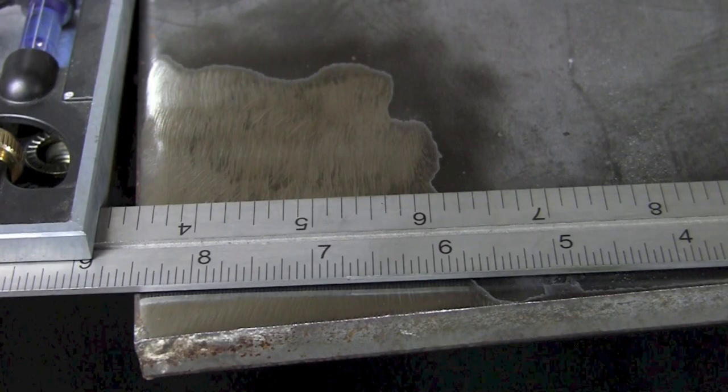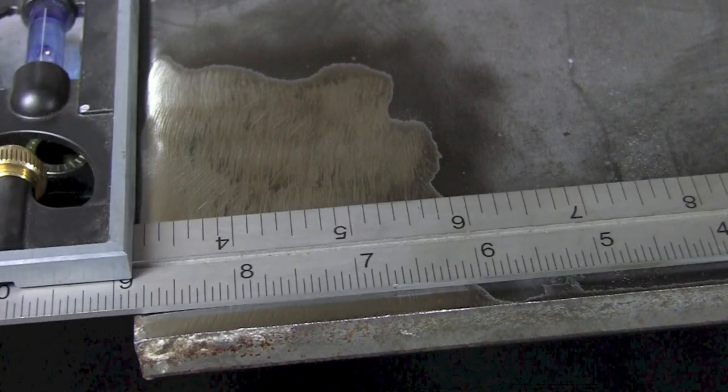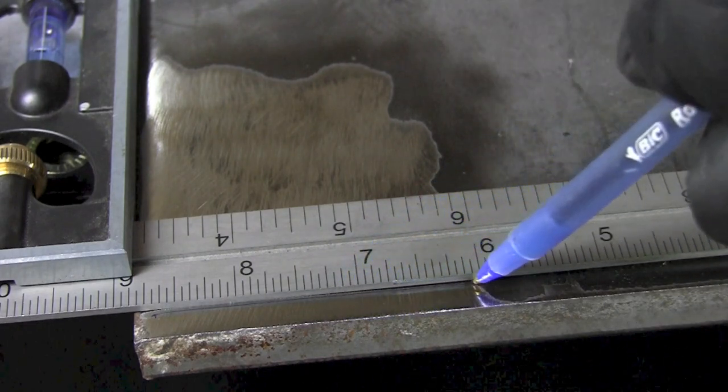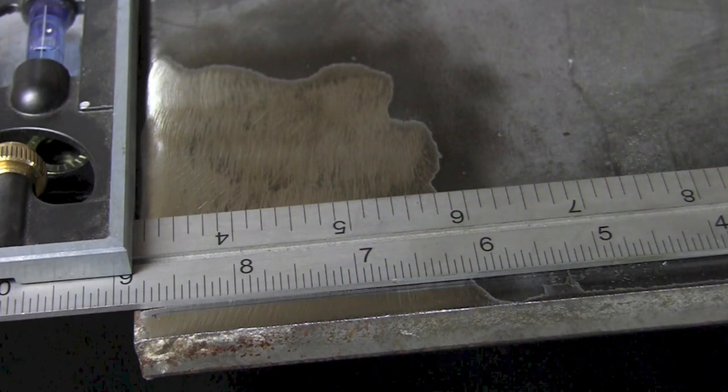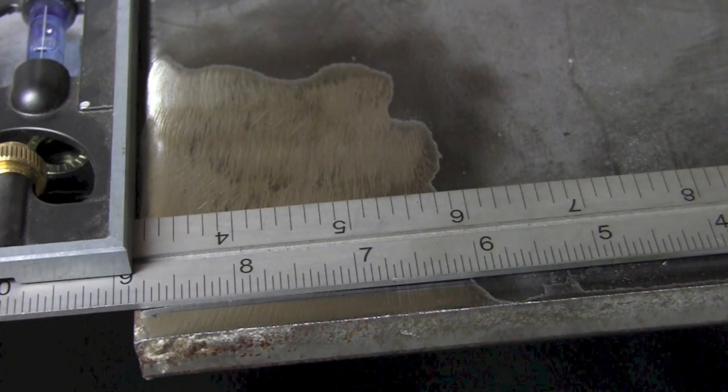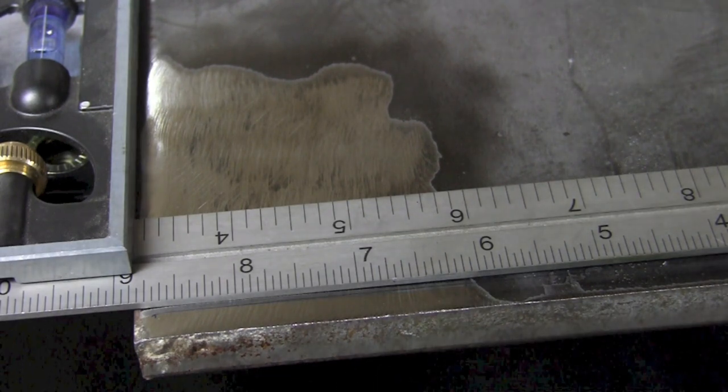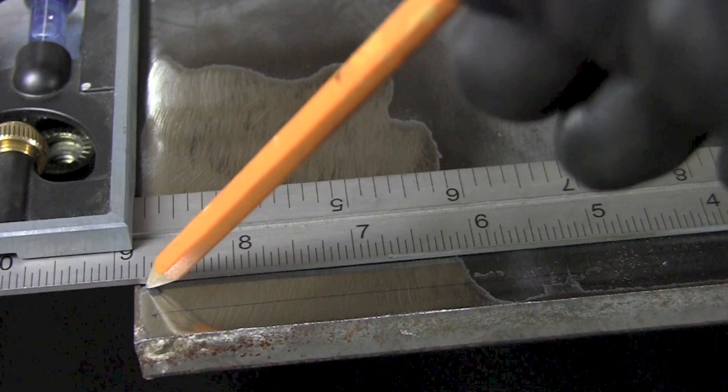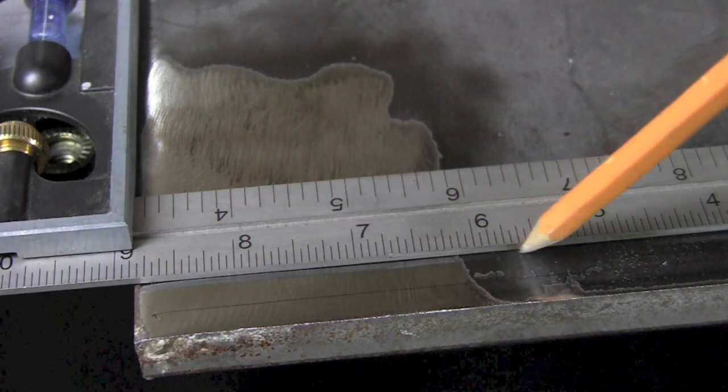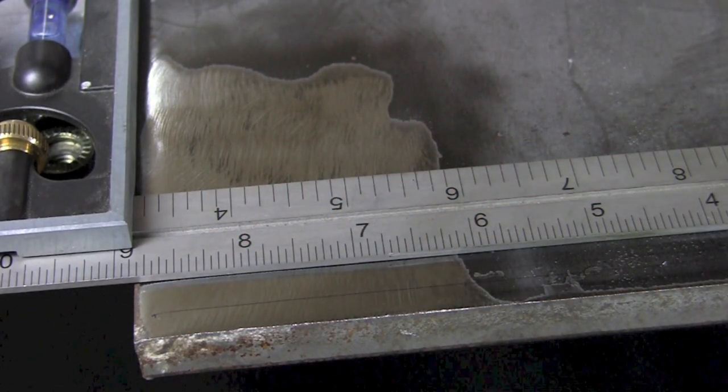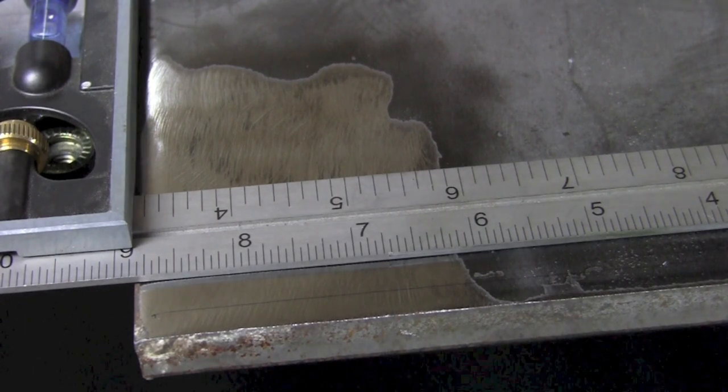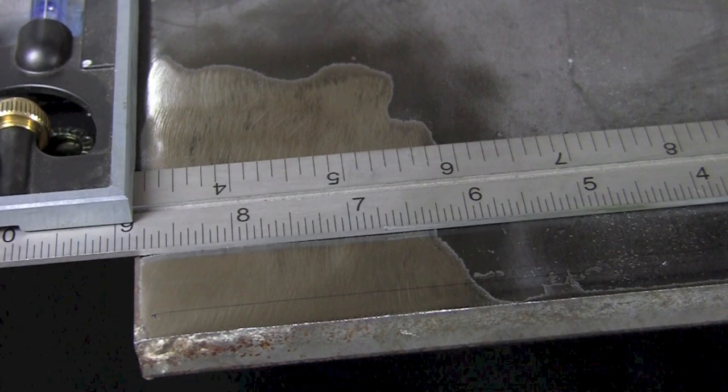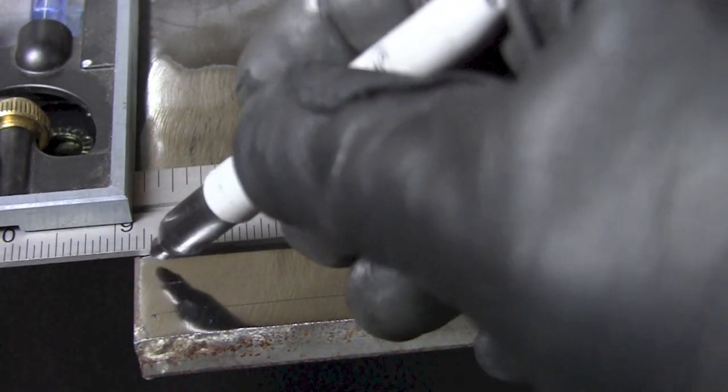Now we're going to use the combination square on the edge of the plate to mark a few lines. The first one we mark is with the ballpoint pen, and that makes a marginal line there but not real great. It can be wiped off readily, but the pencil is another method that we can use. It actually makes a pretty good line on the area there where it's been sanded off.